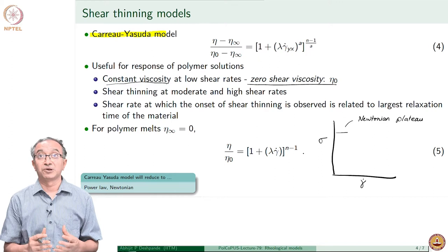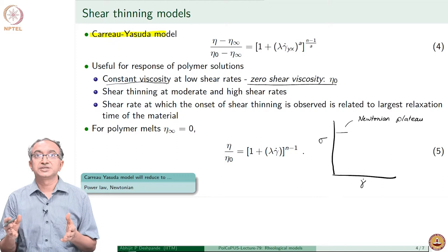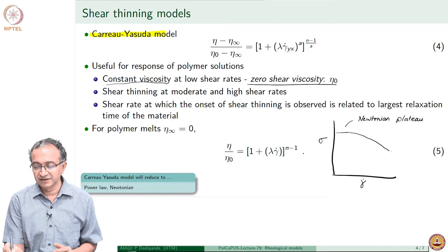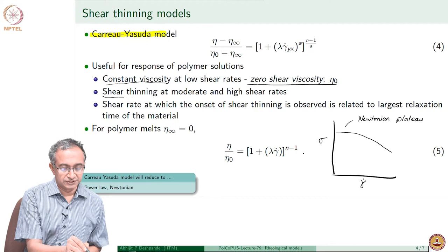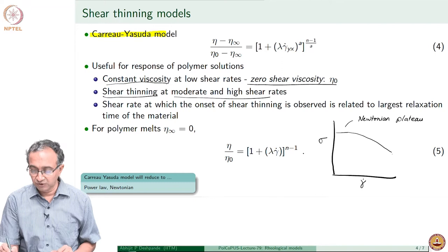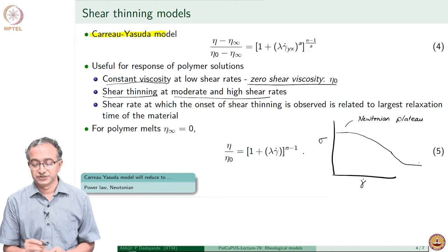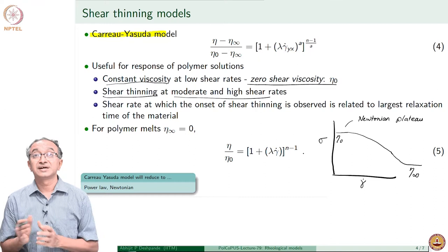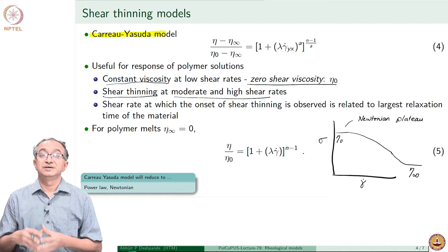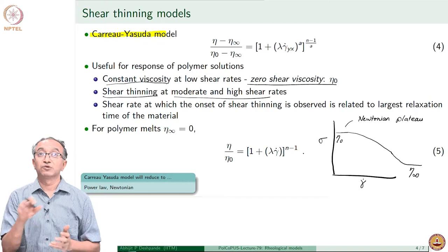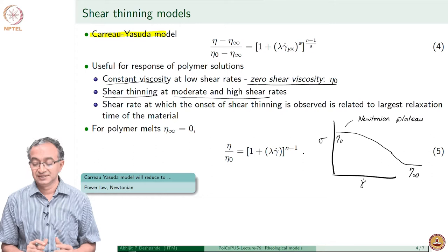From a polymer processing point of view, we need to know the viscosity at all different strain rates. When strain rate is increased, the shear thinning nature is obvious in case of polymer melts and solutions. The Carreau-Yasuda model also shows that at very high shear rates, viscosity again becomes constant. This eta-infinity is related to the solvent viscosity — at very high strain rate, all the chains are aligned in the flow field direction and therefore viscosity modification due to polymer addition is much less, so eta-infinity is closer to the solvent viscosity.